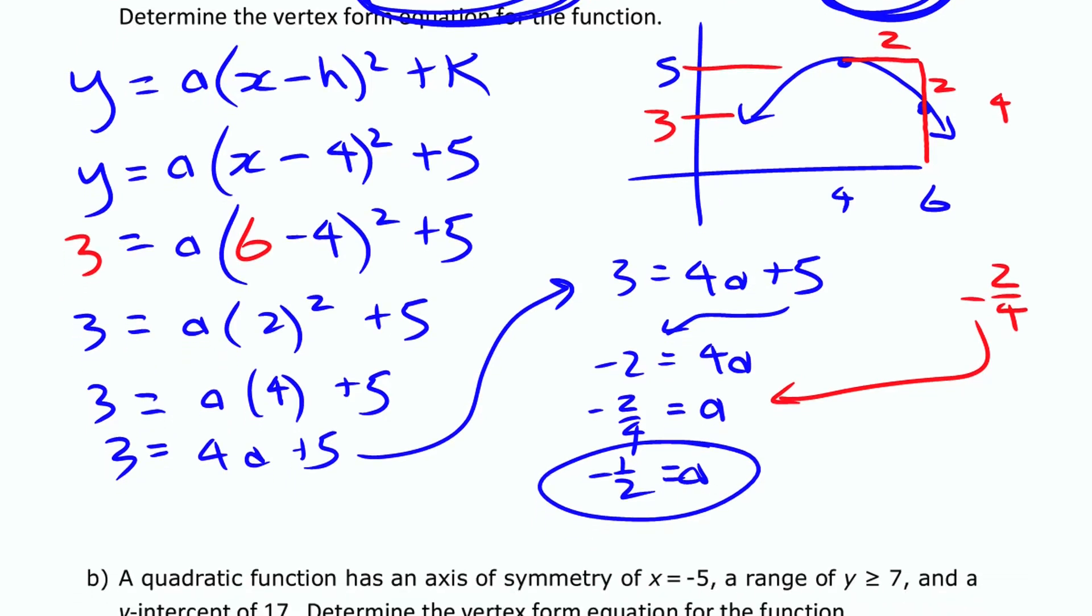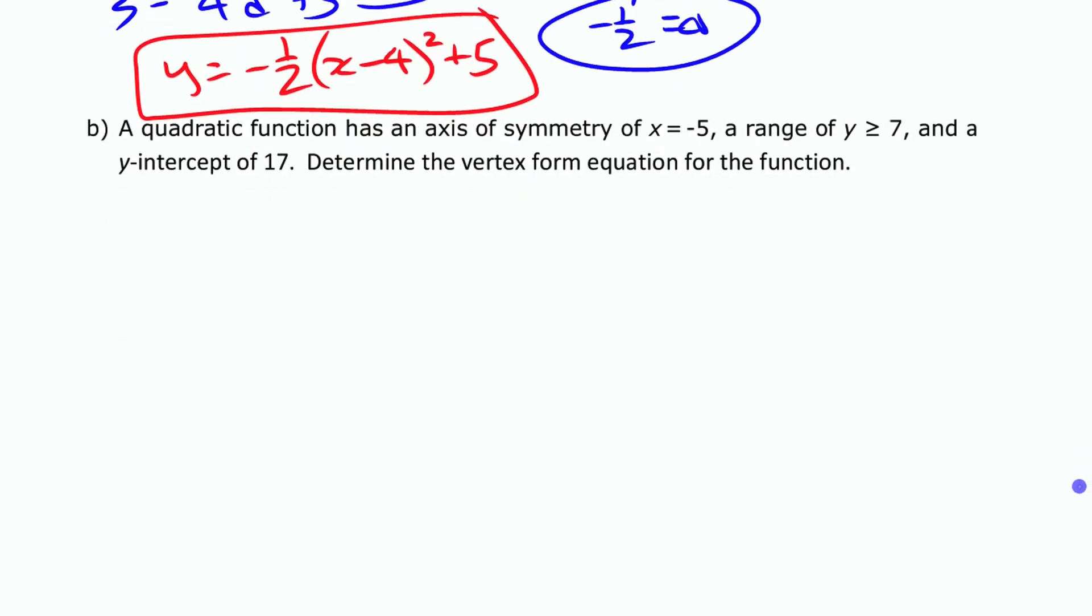So I should probably write my equation there. I didn't leave myself much room, but y equals negative 1 half x minus 4 squared plus 5. That's my vertex form equation. Alright, let's try another one here. We have some different information this time.